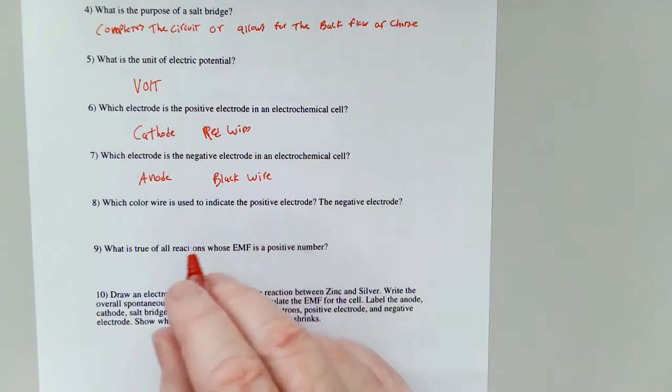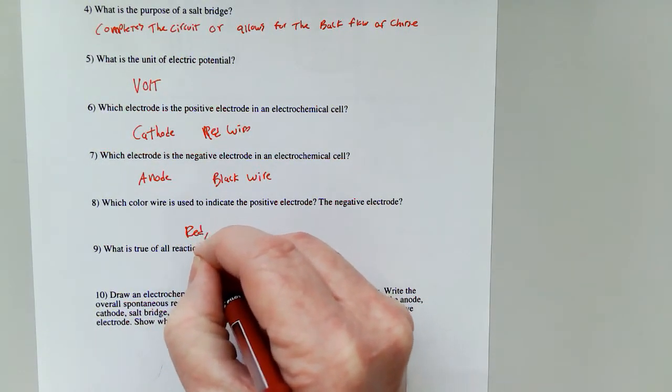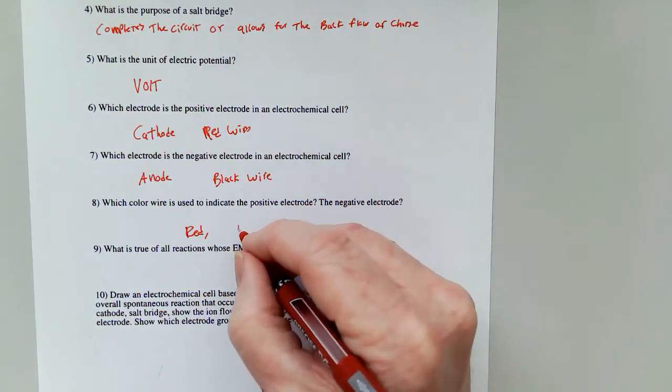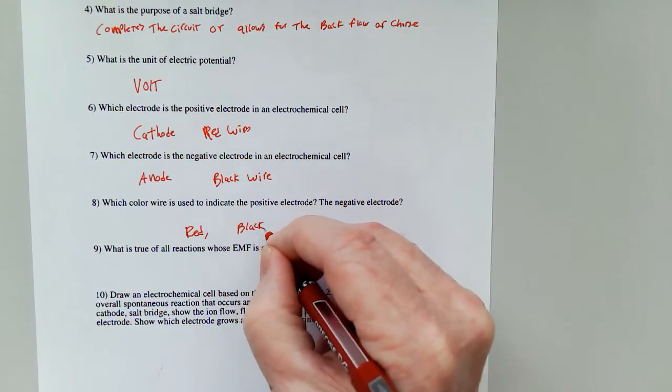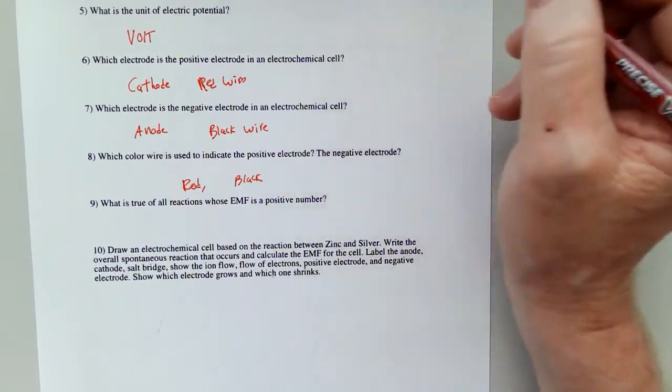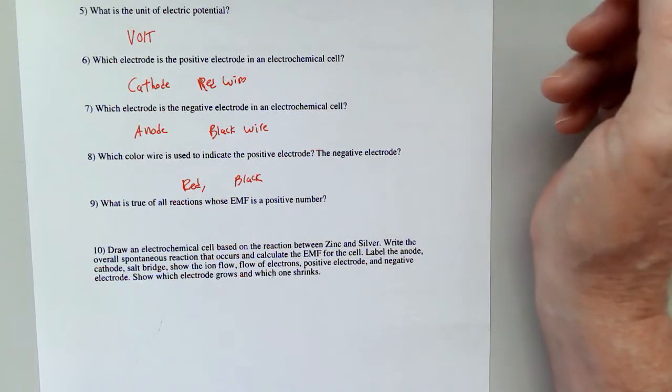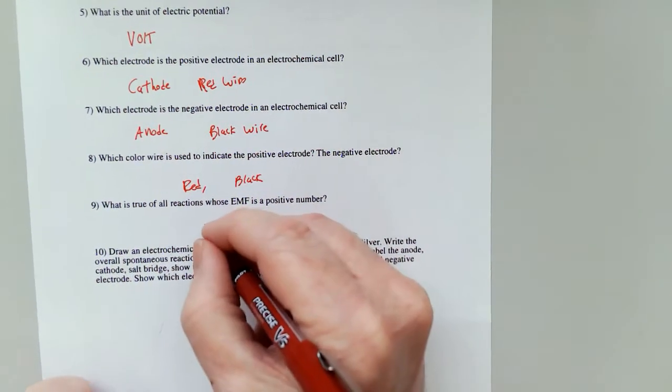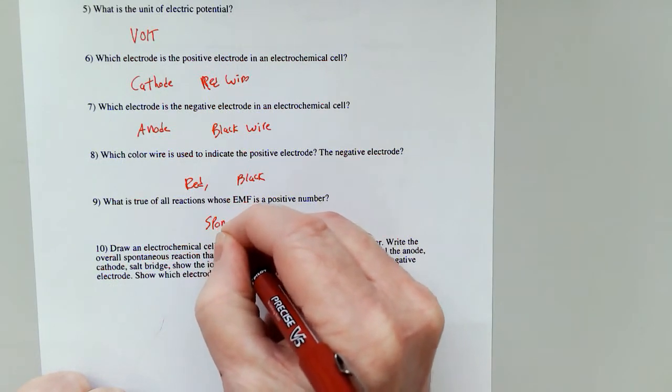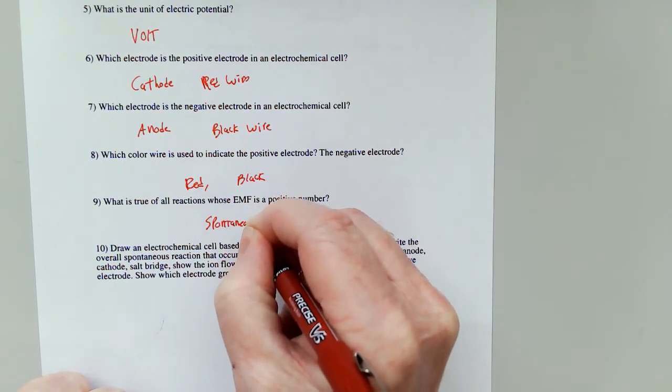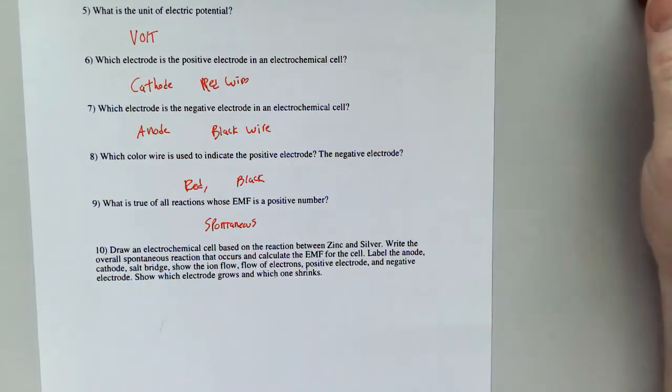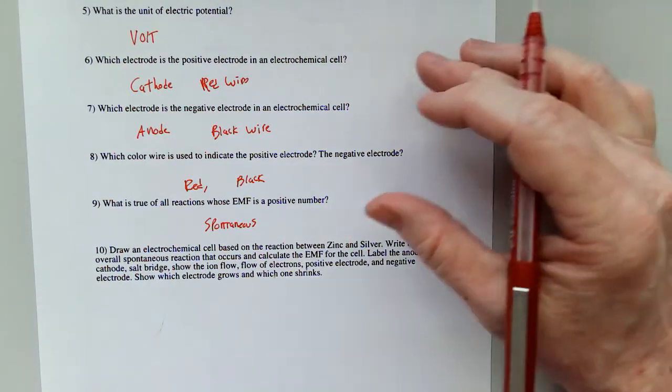So positive electrode, that's the red. Negative electrode, that's the black. So what's true of all the reactions whose EMF is a positive number? It's going to be spontaneous. That means it happens without outside influence.